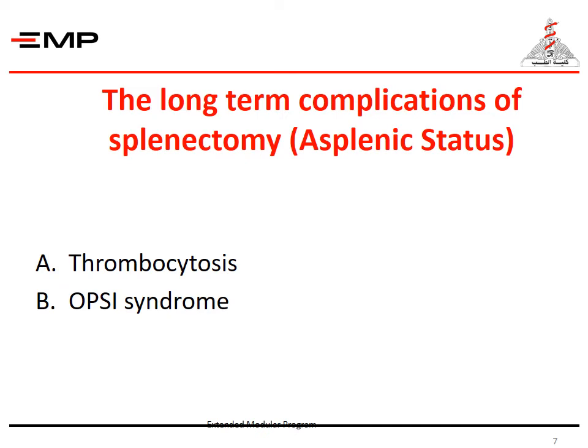Overwhelming or opportunistic post-splenectomy infection syndrome, also known as OPSI syndrome, is a state of liability to severe systemic sepsis with unusual opportunistic organisms. Both humoral and cellular immunity diminish after splenectomy. Children and young adults are more susceptible. The organisms are mainly gram-positive encapsulated cocci: Streptococcus pneumoniae, Haemophilus influenzae, and Neisseria meningitidis are the most common. Escherichia coli comes next. Pneumonia or meningitis might develop within hours and progress to septic shock with fatal consequences within a few days. Patients are also susceptible to other non-bacterial infections like malaria.